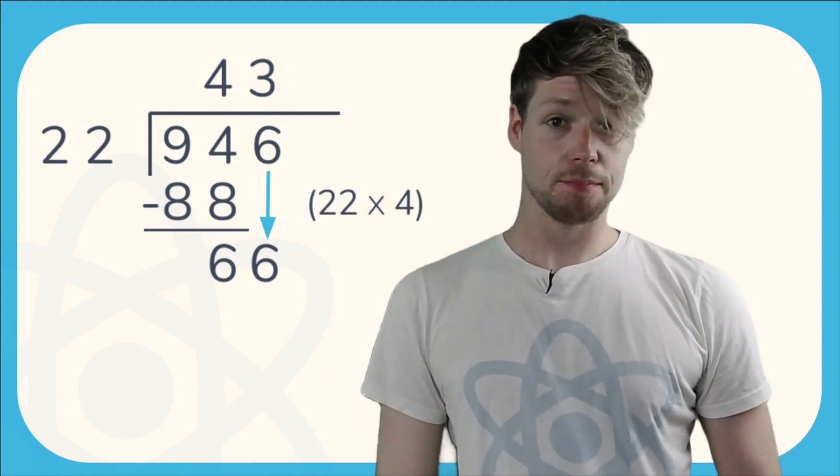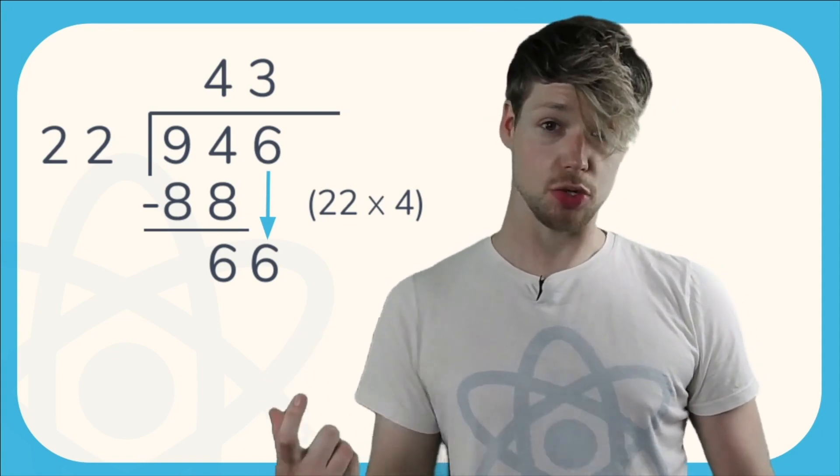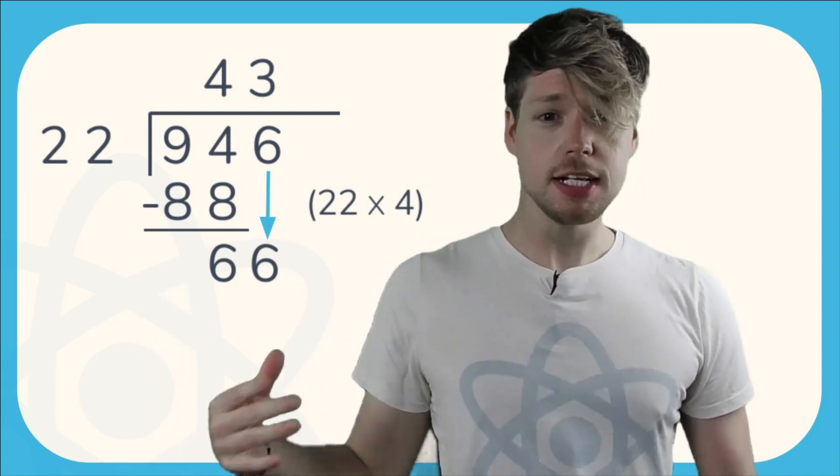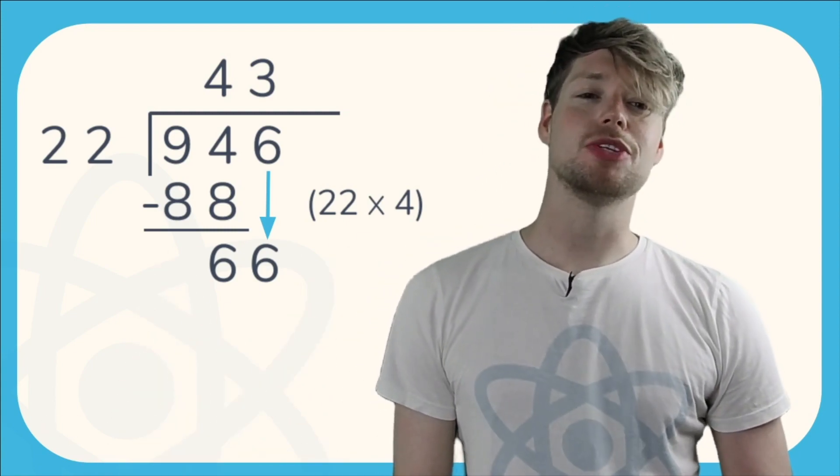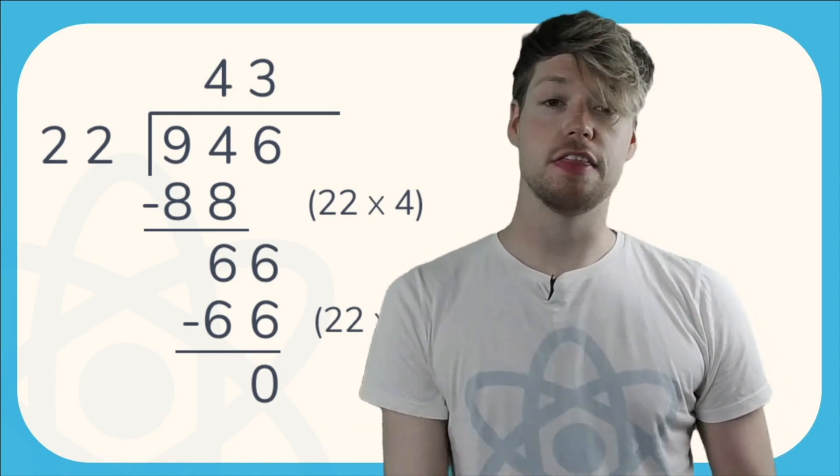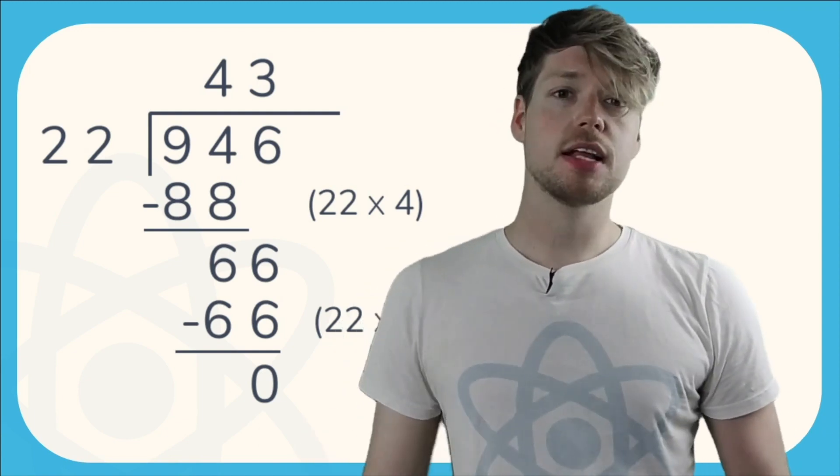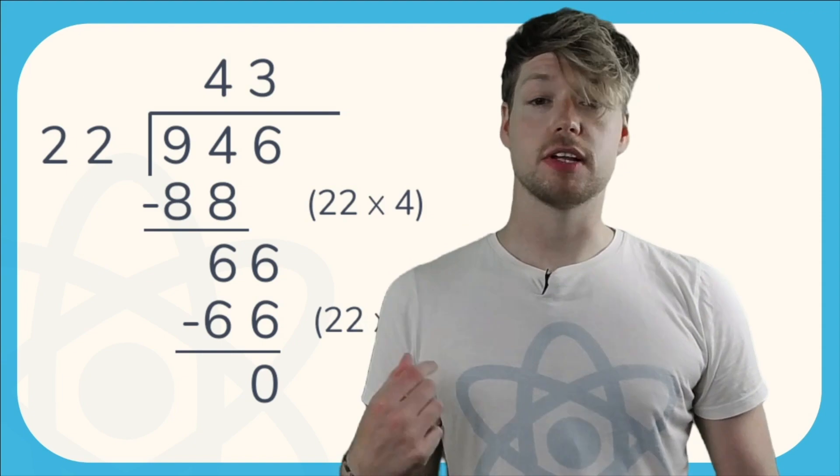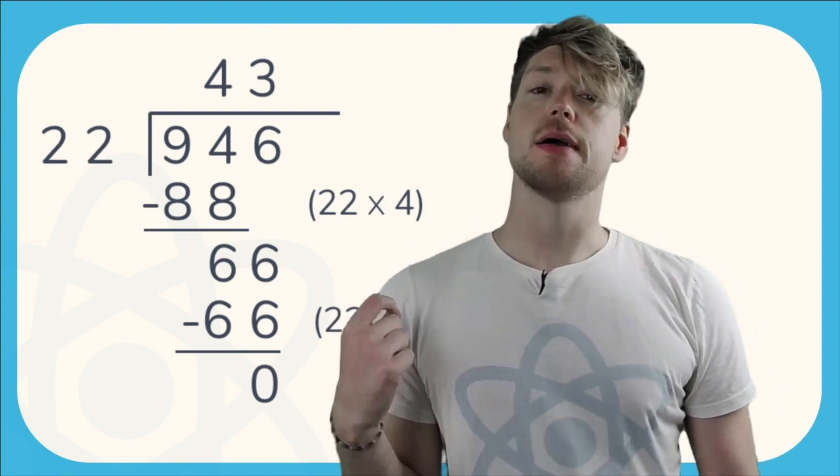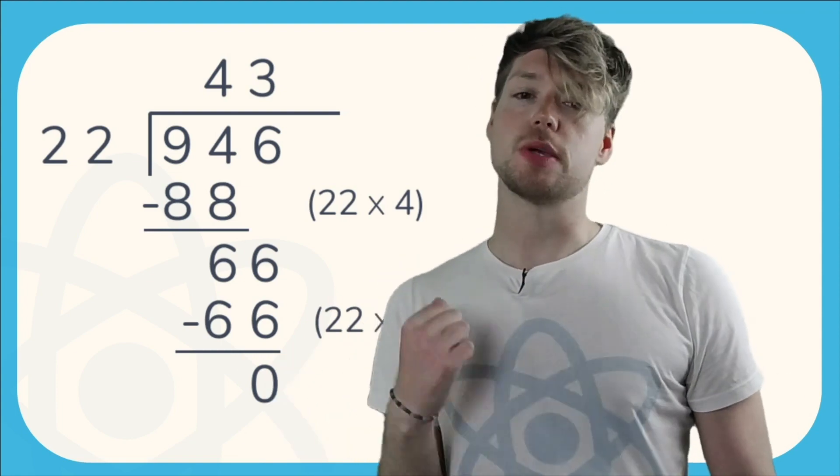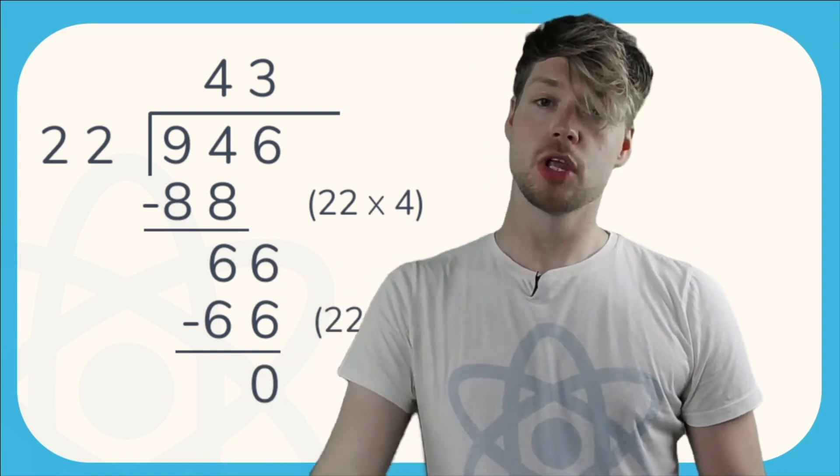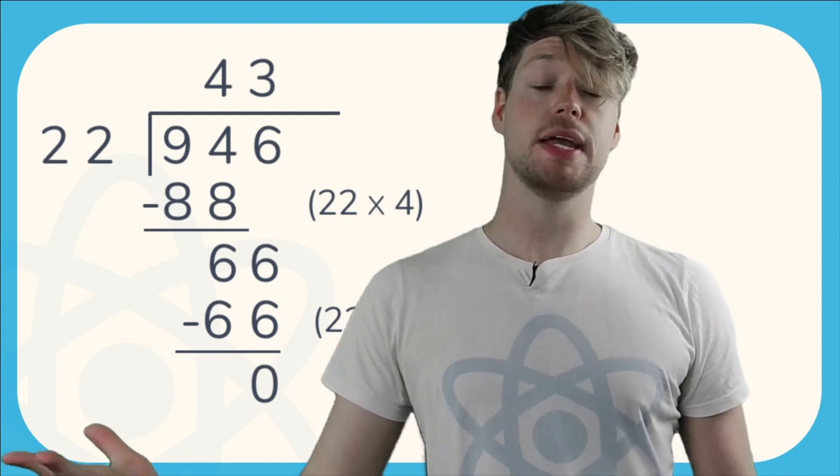So we need to do 66 divided by 22. Do you remember the 22 times tables? 22, 44, 66. So 22 goes into 66 three times. That means we write a 3 above the 6 in the 946 to give us 43. Once we've done that division, so we've done 66 divided by 22 to give us 3, we do a multiplication. 3 times 22 is 66. We then subtract those numbers from each other. So 66 subtract 66 is 0.